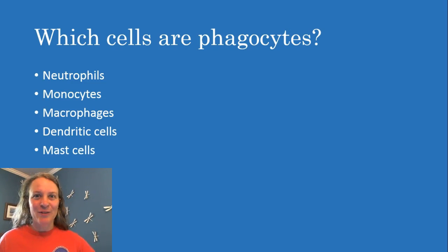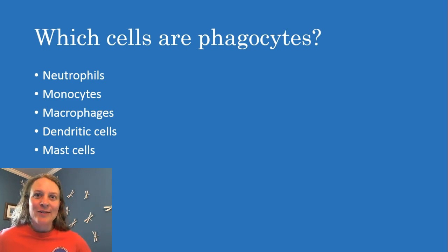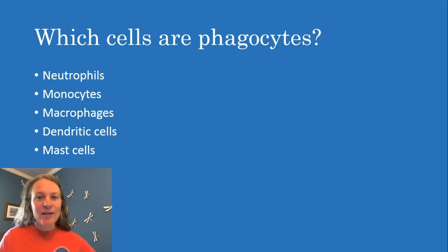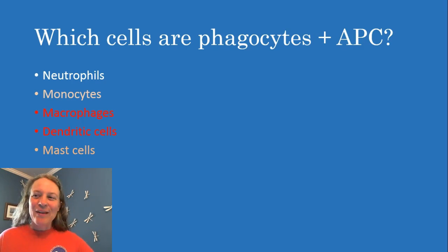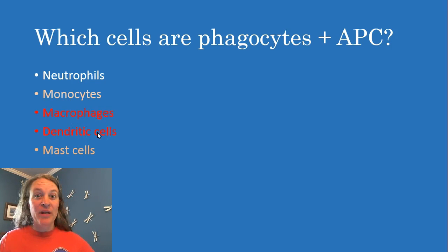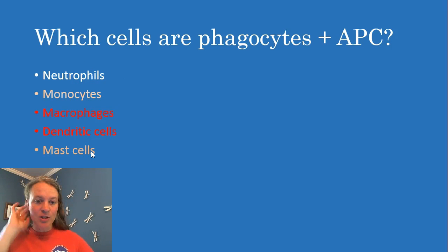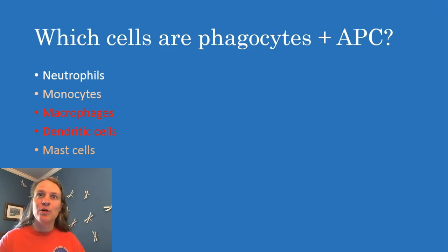So which cells are phagocytes? This is a list of the professional phagocytes. Of course, there are other cells that can phagocytose as well, but we're not going to be talking about them today. Which of the ones listed here are also antigen-presenting cells? It's a little bit of a trick question. Macrophages and dendritic cells are sort of the big guns when it comes to antigen presentation. However, monocytes and mast cells may also be antigen-presenting cells. I'm going to take a little detour here and remind you about antigen presentation just to make sure we're all on the same page.